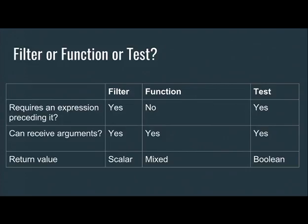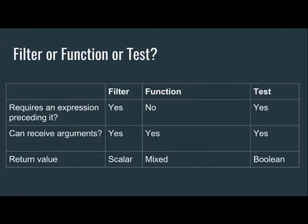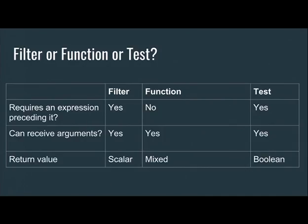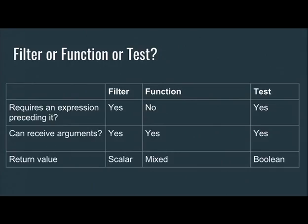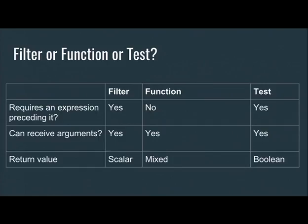To summarize: Twig provides filters, functions, and tests. Filters require an expression preceding them, can receive parameters, and the return value is always a scalar printed inline. Functions don't require an expression preceding them, can receive arguments, and the return value is mixed — it can be a scalar, an array, or something that modifies the whole page without being printed right away. Tests require an expression preceding them, can receive parameters, and the return value is always a boolean — yes or no.